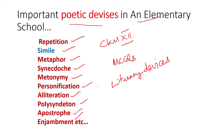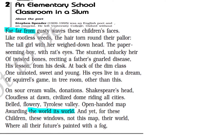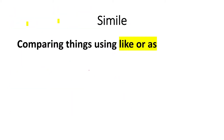Let us check each of these poetic devices from the poem 'An Elementary School Classroom in a Slum.' The first poetic device is repetition. Repetition means the same words repeat in a line. Look at examples: 'far far,' 'the world world' — these phrases are examples of the poetic device of repetition. Also 'far far,' 'break break' — repetition of the same word.